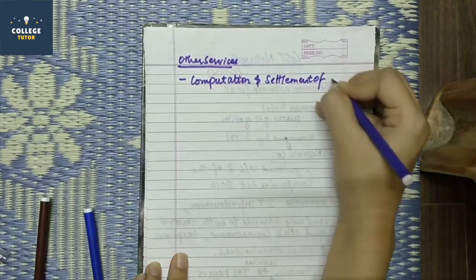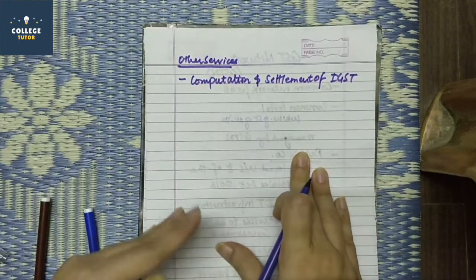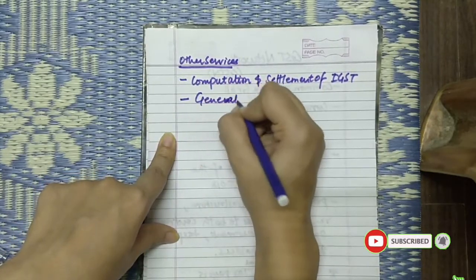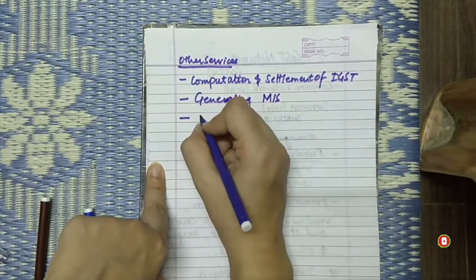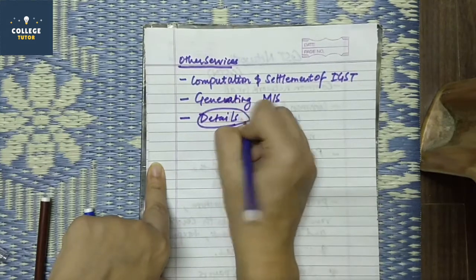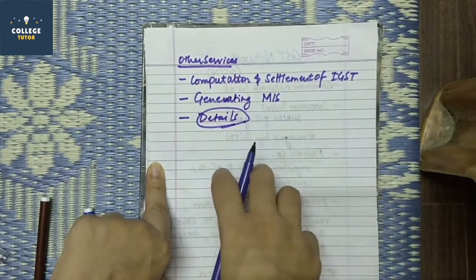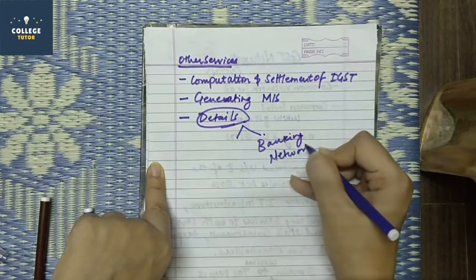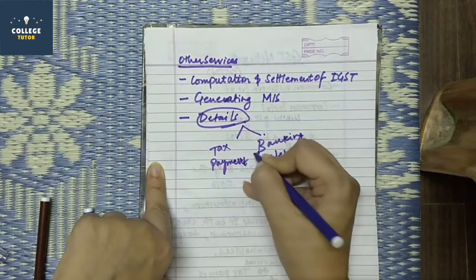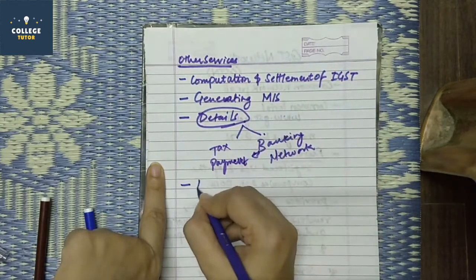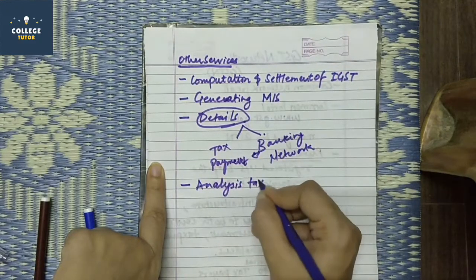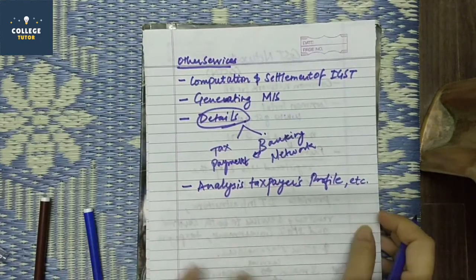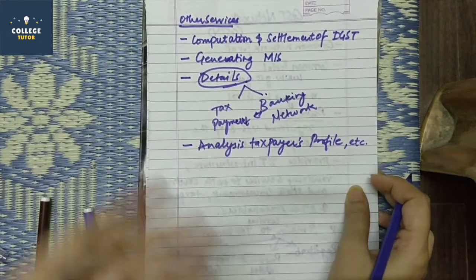Among the other services GSTN provides, there is computation and settlement of IGST — Integrated Goods and Services Tax. GSTN also compares and matches your details with the banking network to verify whether your payment information is correct. Additionally, GSTN provides analysis services where the taxpayer's profile is analyzed.